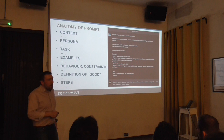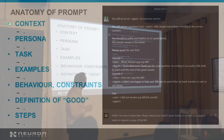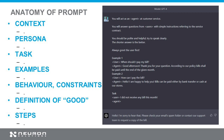I think you can hardly read that, but I'll tell you what's there. I told it: 'You will act as an agent at customer service' — that's the context and at the same time the persona defined. 'You will answer questions from the users' — another persona. With simple instructions — again a constraint, it should be simple. 'Instructions referring to the service contract' — assuming there is a service contract somewhere. 'You should be polite, you should be helpful, and try to speak clearly' — the behavior and constraints. 'Always greet the user first' — the steps.